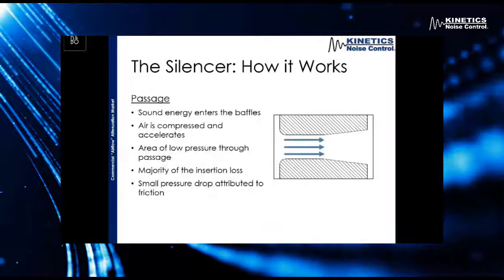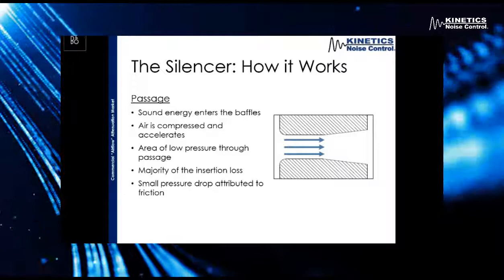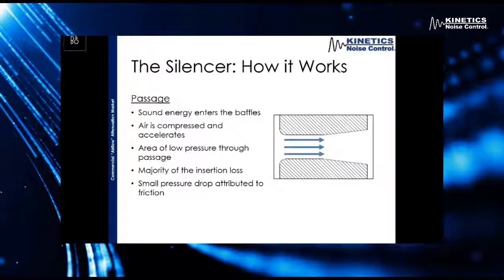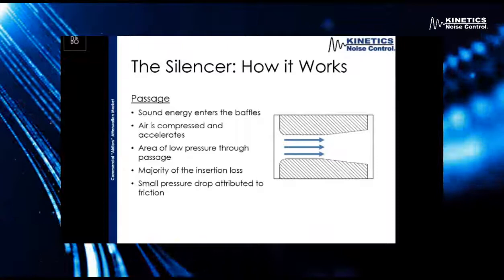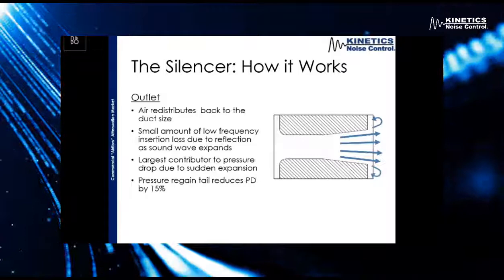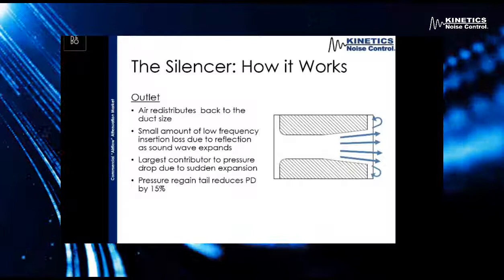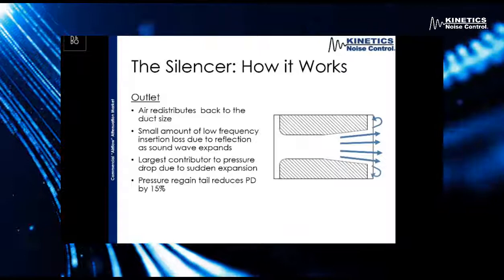Next, through the passage of the silencer, this is where the majority of the insertion loss happens. The airflow comes in between the baffles — it's compressed and accelerates — and that sound energy goes through the perforated sheet metal to the acoustic media where it's dissipated. We do get a small amount of pressure drop here as well, but definitely not a significant amount — it's mostly just due to some friction losses as that air travels over the perf. Then lastly, we have the outlet of the silencer, where the air is redistributing back to the duct size. We get a small amount of low-frequency insertion loss here — there's a little bit of reflection of the sound wave as that air expands. But this is also going to be the largest contributor of pressure drop, due to the sudden expansion of that air back into the ductwork size.